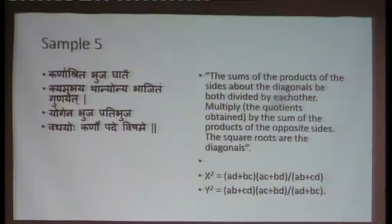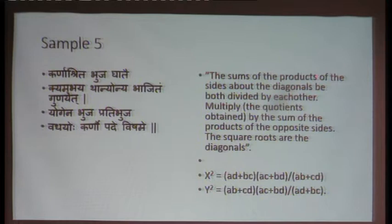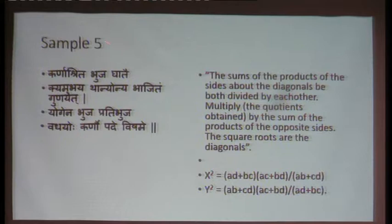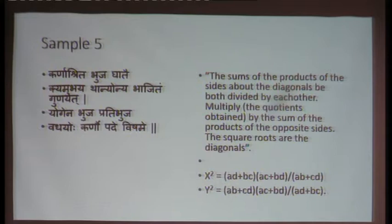The way in which it is expressed — sometimes I speak at length about this also — without symbols, how were they able to express the formulas? The expression A·D + B·C into A·C + B·D: how do we express it just in a verse? It says the sums and the products of the sides about the diagonals be both divided by each other. Let me go directly to the Sanskrit. 'Bhuja' means sides; 'ghata' means product; 'karna' means diagonal.